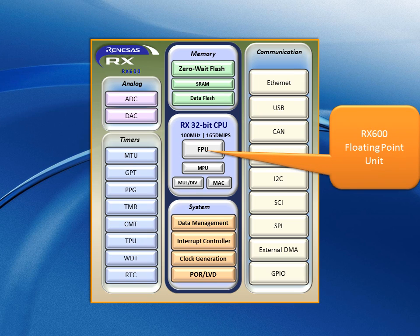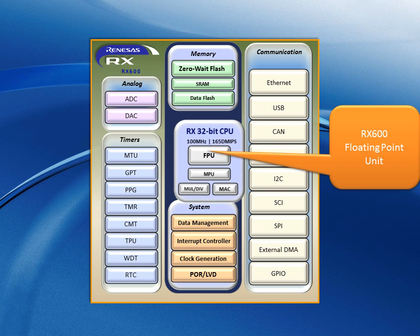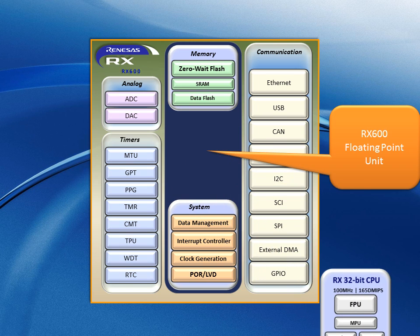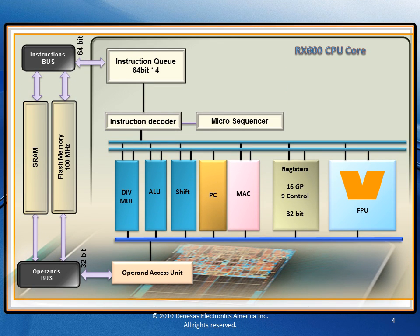Let me zoom in into the CPU core and see how the floating point unit is connected inside. In this block diagram, you can see the various elements present inside the core alongside the floating point unit. As shown in the diagram, the FPU is tightly connected to the CPU, sharing the same registers. As a result, floating point operations can be similarly performed without employing external registers, reducing data transfer overhead.